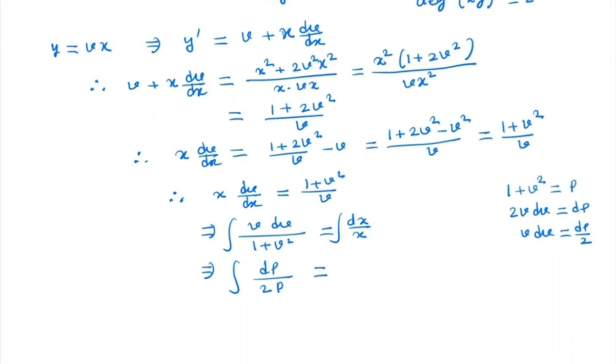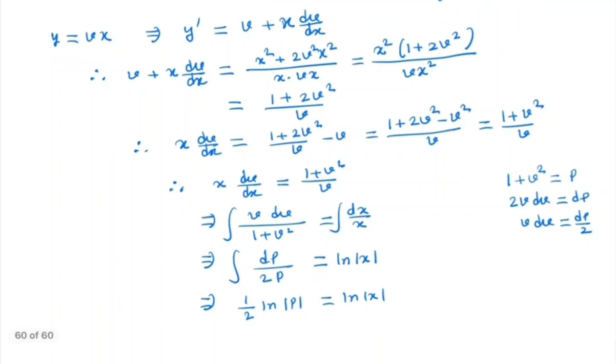And in the right hand side, we have ln x. Okay, so integral dp by 2p is nothing but half ln p is equal to ln x. And since we have ln on both sides, we take the constant as ln c. So here we have, if we multiply by 2, we have ln p is nothing but 2 ln x plus 2 ln c.